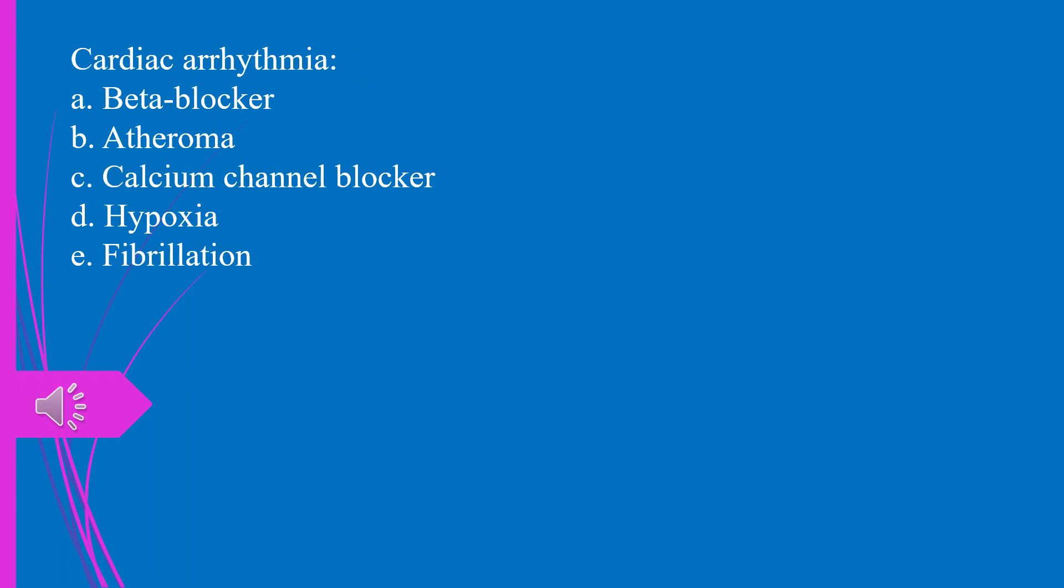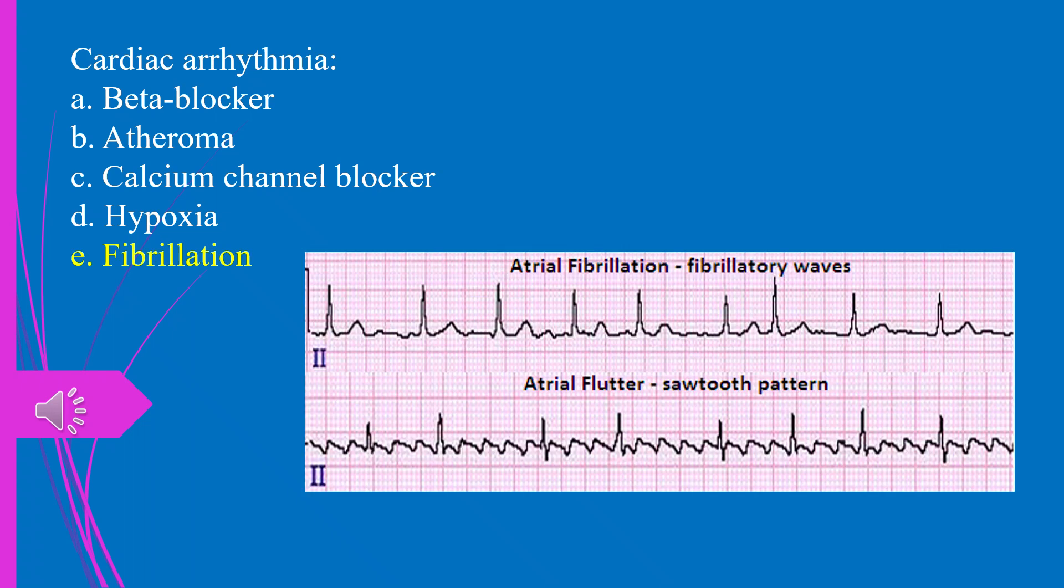Cardiac arrhythmia, A. Beta blocker. B. Atheroma. C. Calcium channel blocker. D. Hypoxia. E. Fibrillation. The answer is E. Fibrillation.